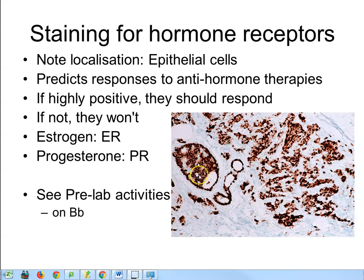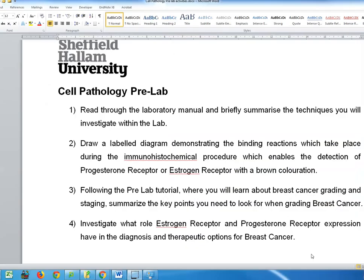We want you to draw out an immunohistochemistry reaction as you are going to perform it in the lab. If you need inspiration, look through your lab script, which lists all the reagents you'll be using. Draw a labelled diagram demonstrating all the binding reactions for estrogen receptor detection, including primary and secondary antibodies and all detection system components. You'll want to use terms like IgG Fc, anti-IgG Fc, and the different animals the antibodies are raised in — label those up as well.